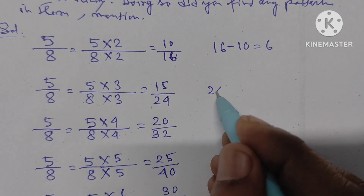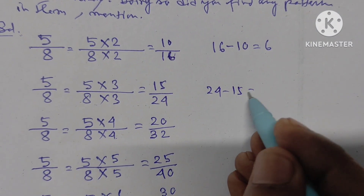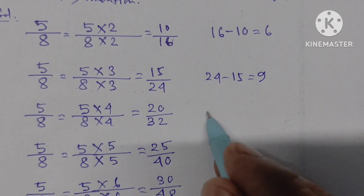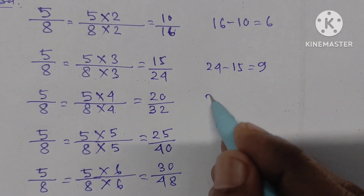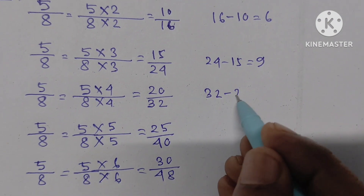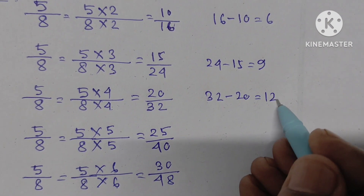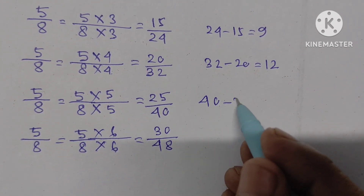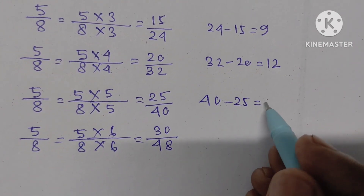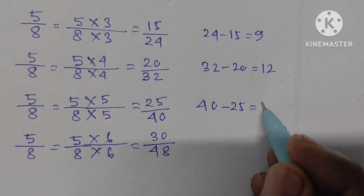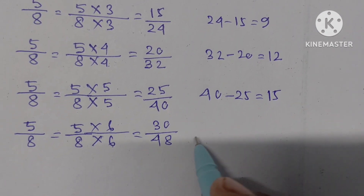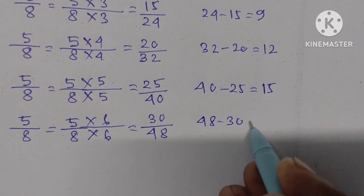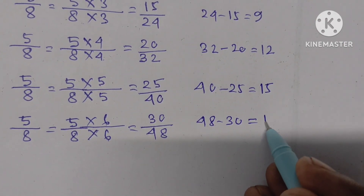24 minus 15 equals 9. Next, 32 minus 20 equals 12. Then 40 minus 25 equals 15. And 48 minus 30 equals 18. We have calculated all the differences.